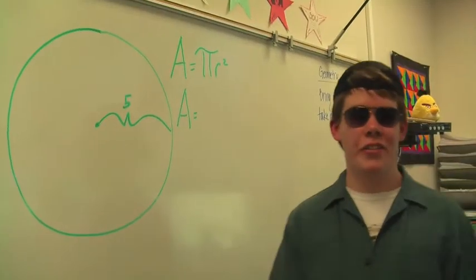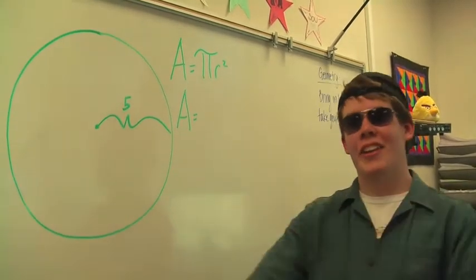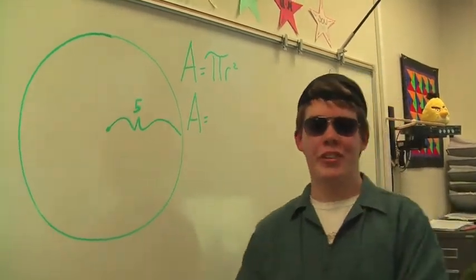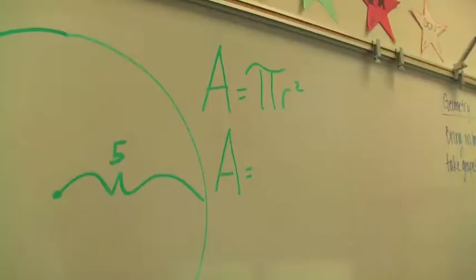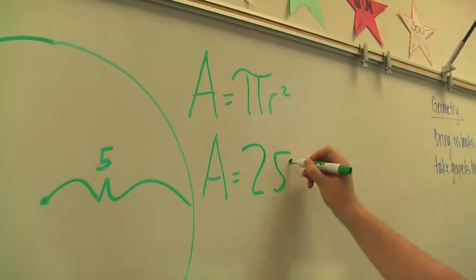Pi is a ratio of circumference and diameter. If anything, I can say this ratio is sweet. Now I can calculate the area of a circle in feet. 25 pi.